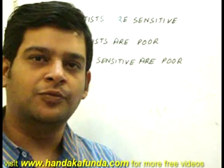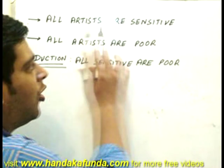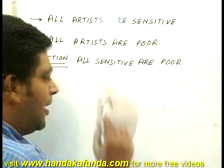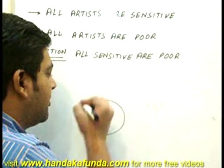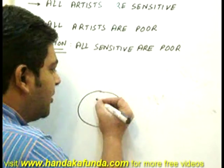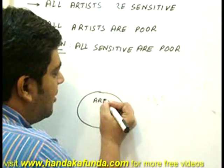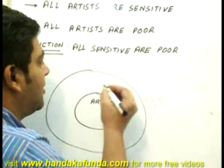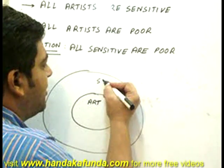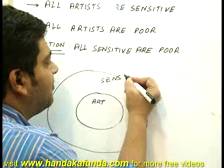Example 2. Here I am given all artists are sensitive as the major premise. So I draw a circle which represents artists and it is inside a bigger circle which represents sensitive people.